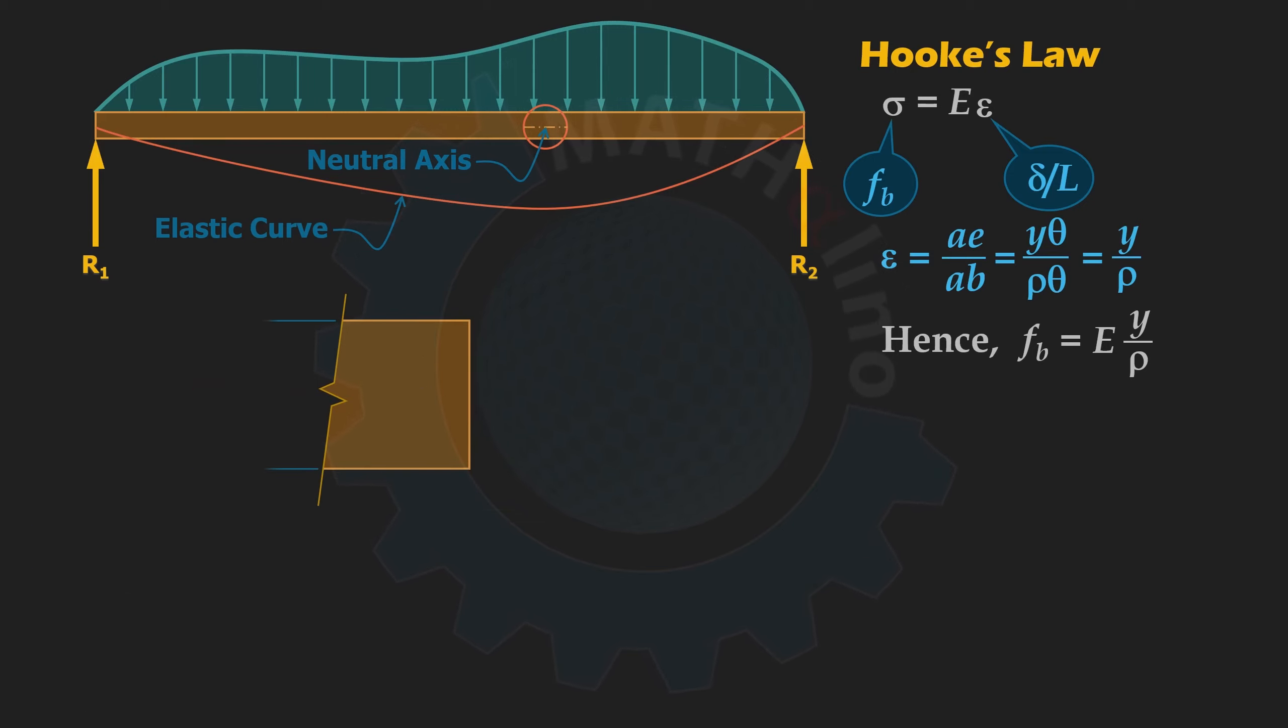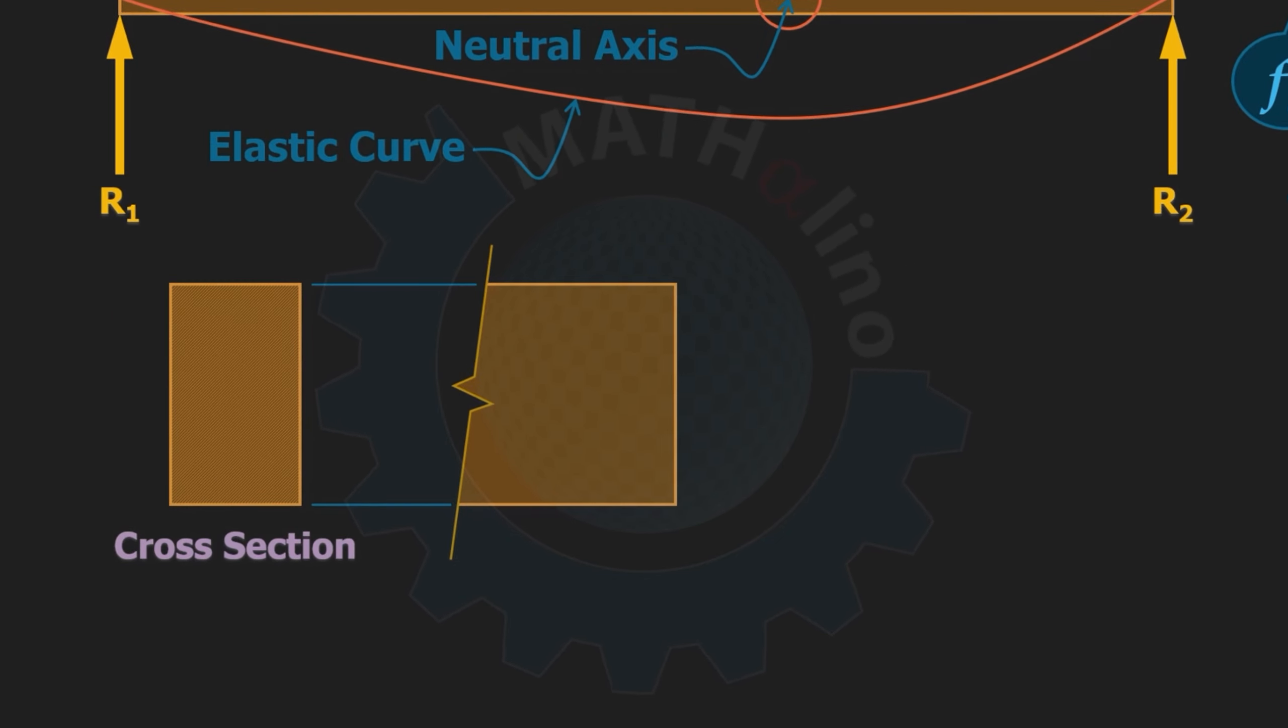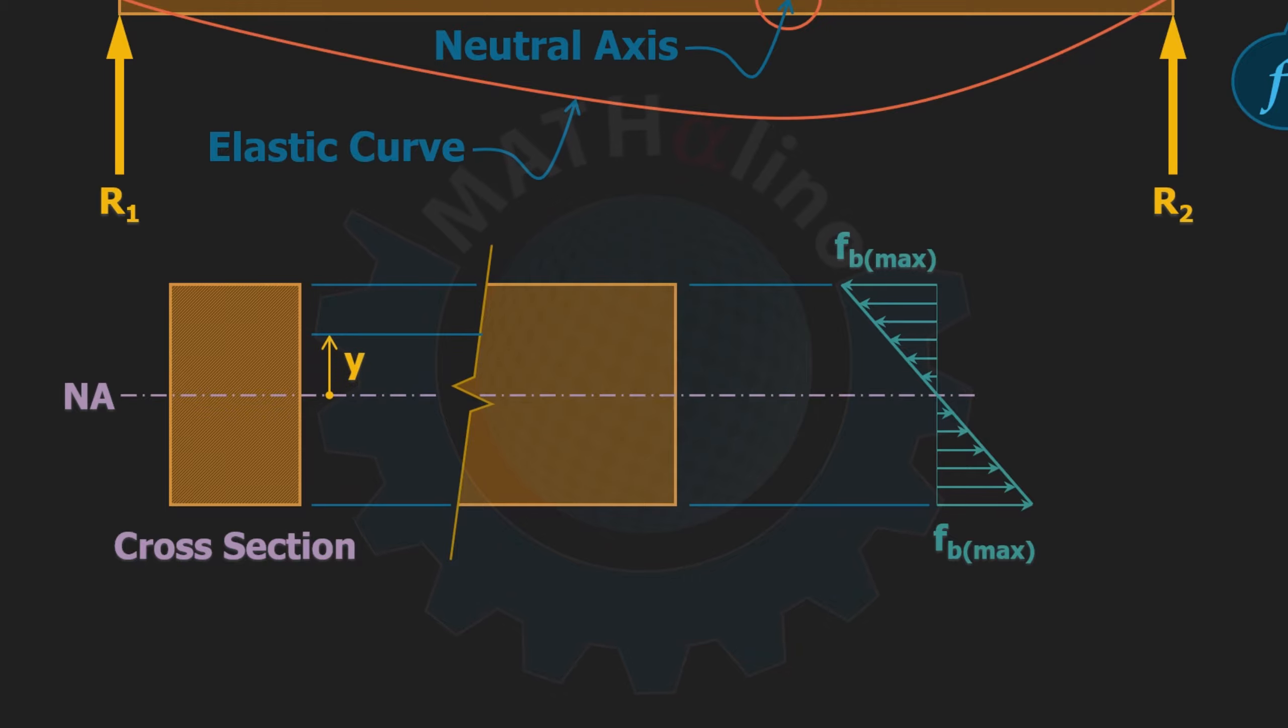Let us now consider the section of our beam. Note that although our example here is rectangular, the derivation of formula is irrespective to shape of the section. We can therefore use the formula to any cross-sectional shape. Observe that the stress distribution is linear in y, and we want to find the magnitude of the bending stress at this fiber. To do that, let df be the differential force that causes fb to the fibers at y.